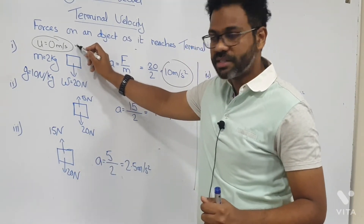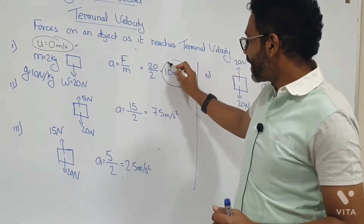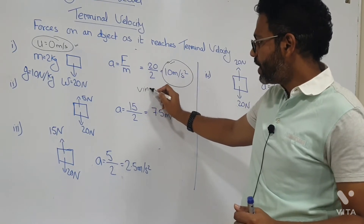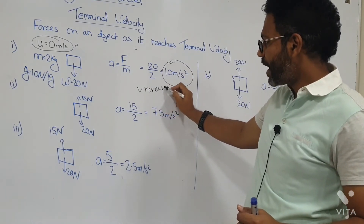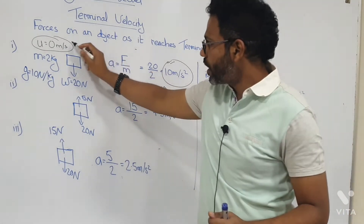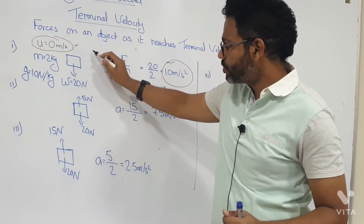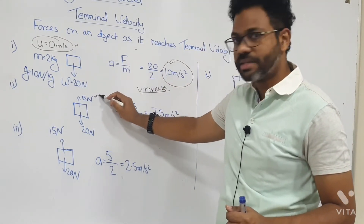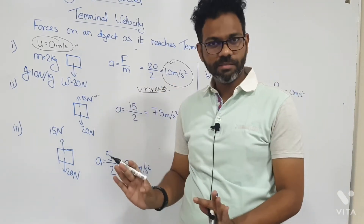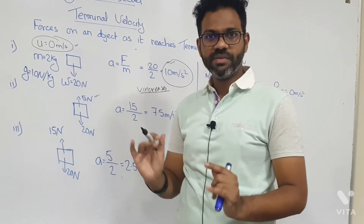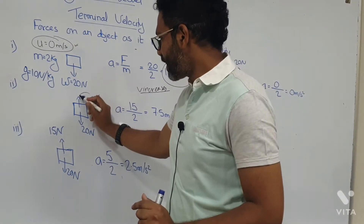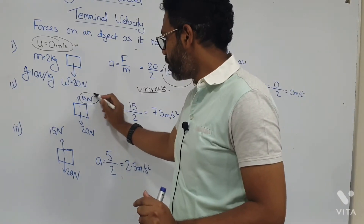The object was initially at rest, now it's accelerating — that means its velocity increases. There was no air resistance before, but now there is an air resistance acting on it. I've taken a random value of 5 Newtons, so let's say the air resistance acting on the object is now 5 Newtons.